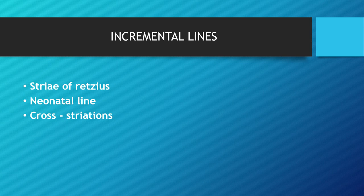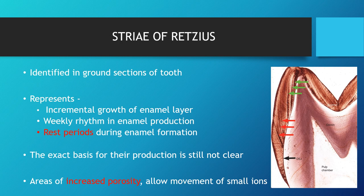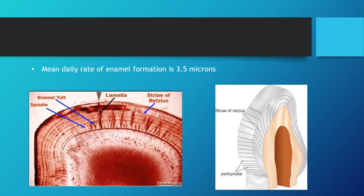Incremental lines include striae of Retzius, the neonatal line, and cross striations. Incremental lines represent rest periods during enamel formation. Striae of Retzius are identified in ground section — a ground section is made by grinding a natural tooth against stone or making thin sections using a disc and viewing under a microscope. The striae of Retzius represent incremental growth of the enamel layer, specifically the rest periods during enamel formation. The exact basis for their production is still not clear. They are areas of increased porosity and allow the movement of small ions.